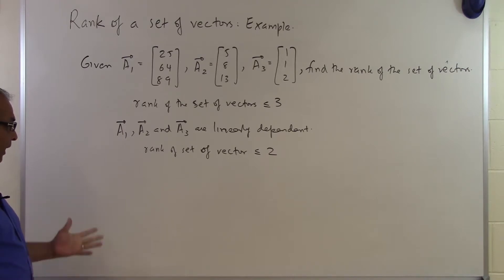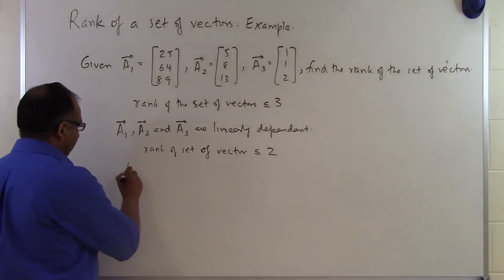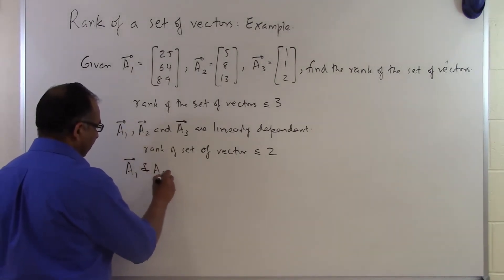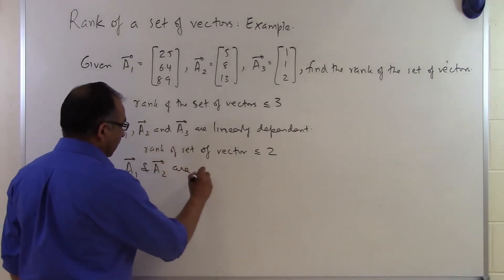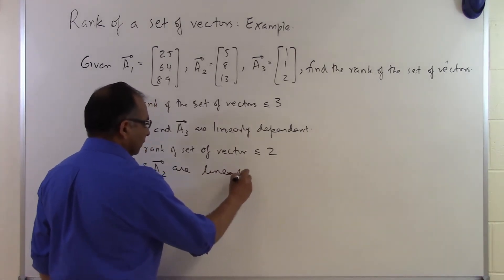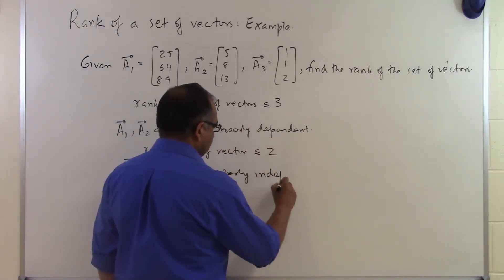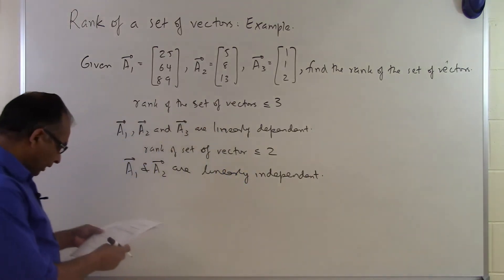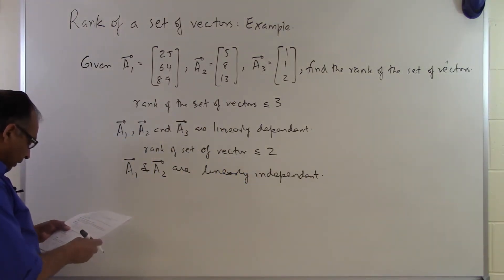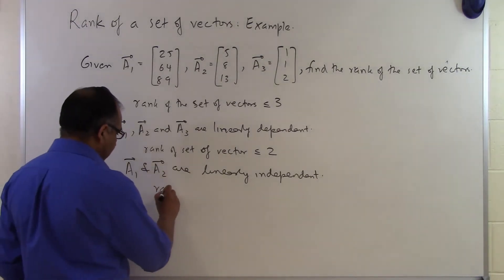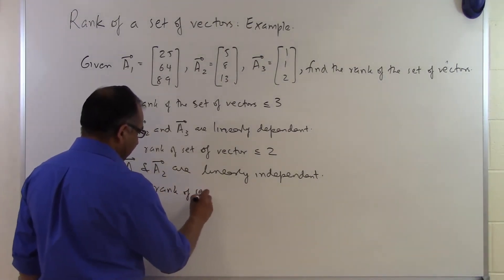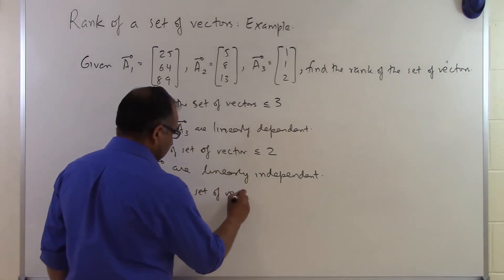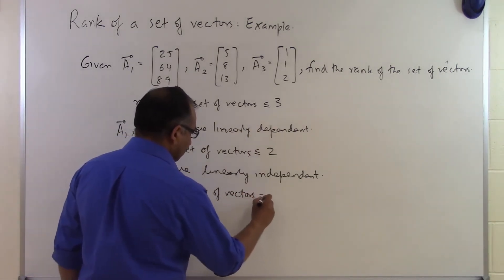So how do we figure out if it's 2, 1, or 0? If you look at A1 and A2, if I take A1 and A2, they are linearly independent. You can show that. And since A1 and A2 are linearly independent, then in that case, the rank of the set of vectors is going to be equal to 2.